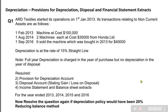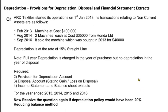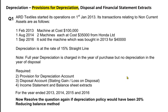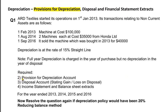Alright my dear students, today we are going to discuss how to make a provision for depreciation account. Provision for depreciation, also known as accumulated depreciation, is the total depreciation till date of an asset. In this question, we need to make a provision for depreciation account first, and then we are going to go for the disposal account.